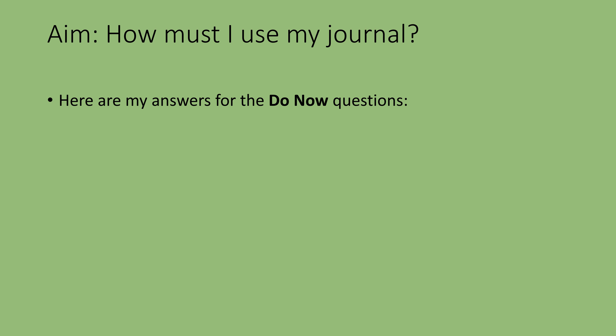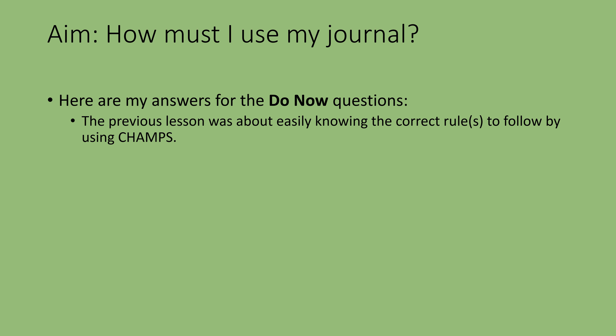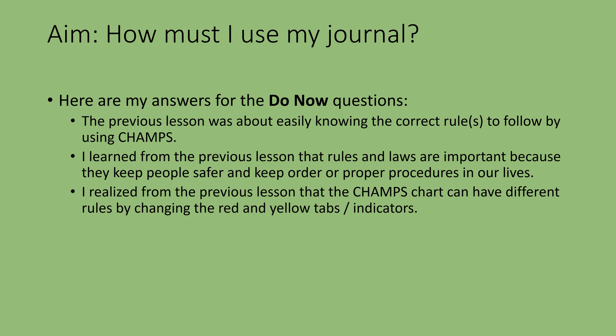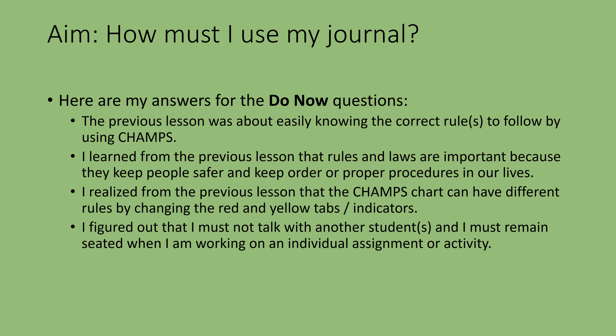Here are my answers for the do now questions. The previous lesson was about easily knowing the correct rules to follow by using CHAMPS. I learned that rules and laws are important because they keep people safer and keep order or proper procedures in our lives. I realized that the CHAMPS chart can have different rules by changing the red and yellow tabs or indicators. I figured out that I must not talk with another student and I must remain seated when working on an individual assignment or activity.